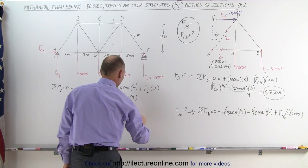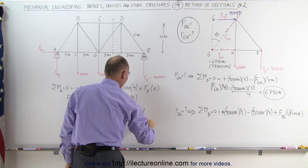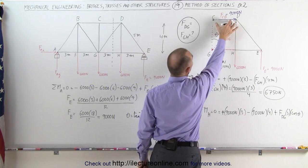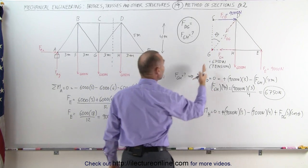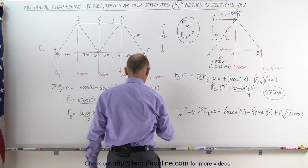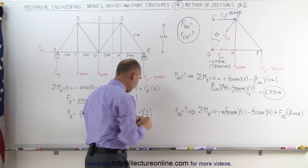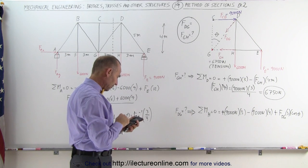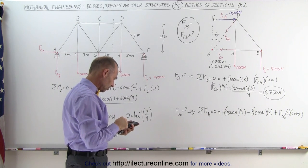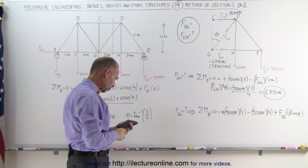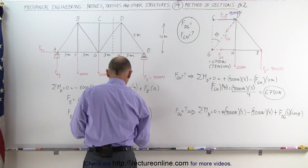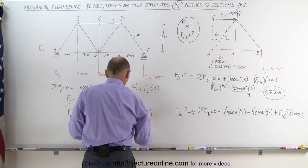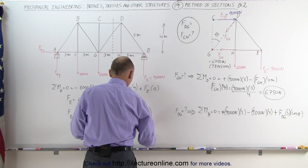Theta is equal to the arctangent of the opposite side of the angle, which is 3 meters, divided by the adjacent side of the angle, which is 4 meters. We're looking for the angle whose arctangent is 3 quarters, 0.75. Take the inverse tangent and we get 36.87 degrees. Theta is equal to 36.87 degrees.